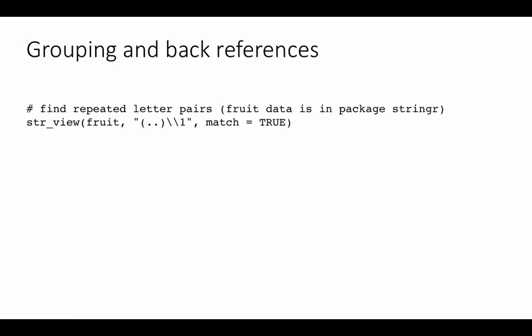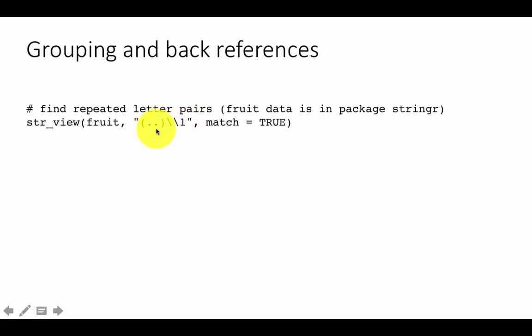And the moment you grouped it, you can later refer to it with a number for the group. So here we are saying: take this pattern, dot dot, and then the same pattern comes here. When I say backslash backslash one, I'm referring to the first group. After all, this pattern has only one group, so this is your back reference. I'm saying match any pattern — any two characters — and then after that it's followed by exactly the same two characters, because we are referring back to that same group. So this would match things like banana and so on.